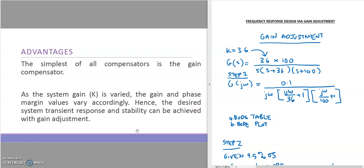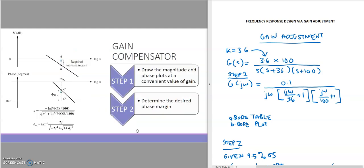By adjusting the system gain K, the gain and phase margin values will also be adjusted accordingly. Therefore, the desired system transient response — for required phase and stability — can be achieved with gain adjustment. There are four steps in this gain compensator or gain adjustment. The first step is to draw the magnitude and phase plots at a convenient value of gain.